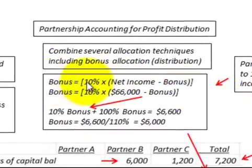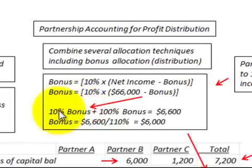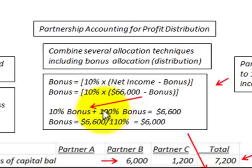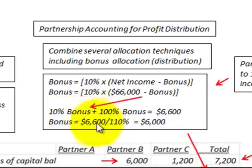The bonus for Partner C equals 10% times (net income minus the bonus). The net income is $66,000, so: Bonus = 10% × ($66,000 − Bonus). Moving the bonus term to the other side: 10% × Bonus + Bonus = 110% of the Bonus = 10% × $66,000 = $6,600. Dividing $6,600 by 110% gives us a $6,000 bonus.